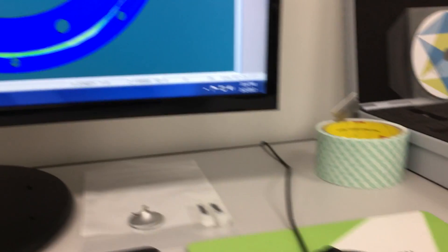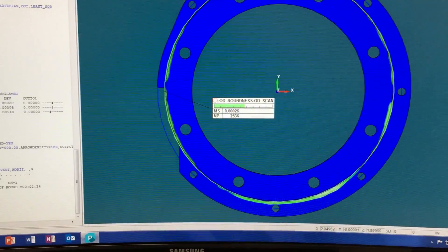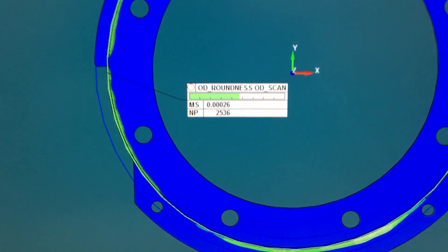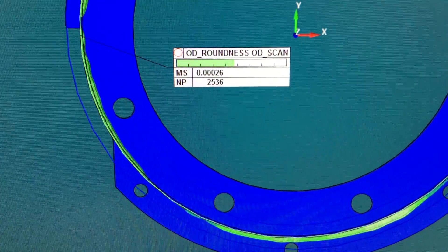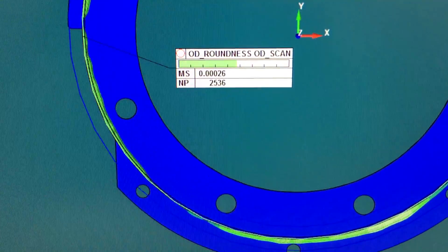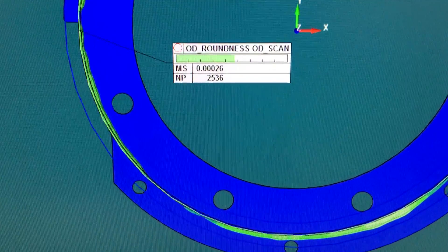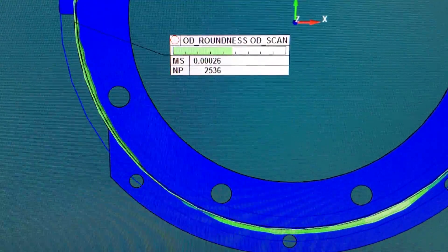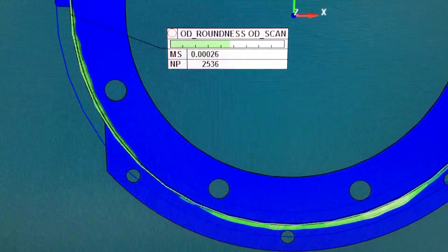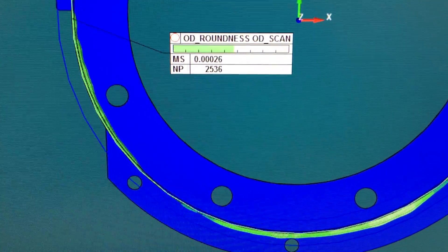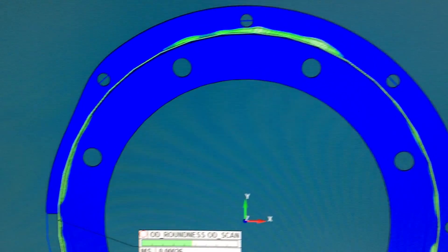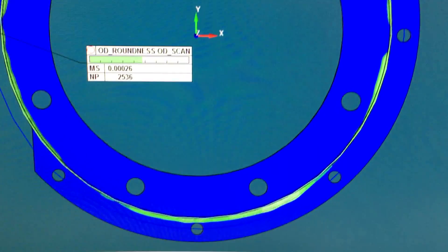So that's been measured. Come over here and take a look at our results. On the screen here, you can see that we took 2,536 points. We have a total roundness error of a little over two-tenths of a thousandth, which is very, very good looking at the speed that we machined that at.